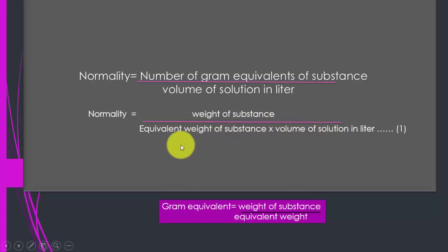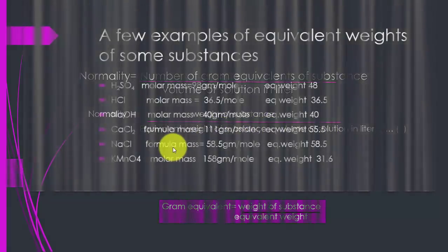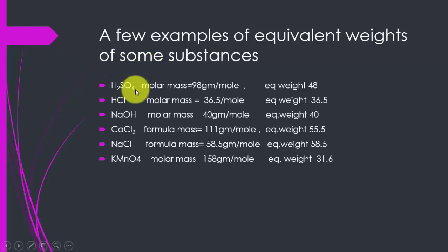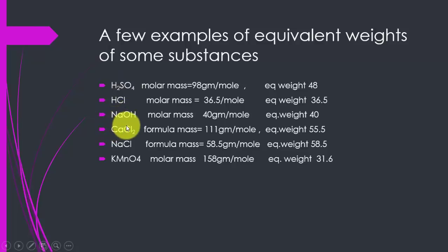Normality is equal to the weight of the substance divided by the equivalent weight of the substance, multiplied by the volume of solution in liters. I have given a few examples of equivalent weights of some substances. The first two examples belong to acids, the third is a base, the fourth and fifth belong to salts, and the last one is an oxidizing agent.